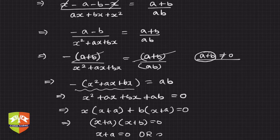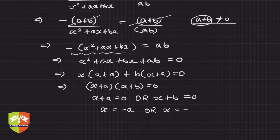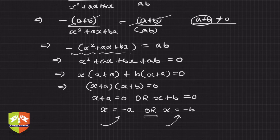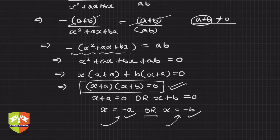Since the product is zero, either (x + a) = 0 or (x + b) = 0. So x = −a or x = −b. We say 'or' not 'and' because if any one of the two is satisfied, the equation holds true. It need not be that x equals both −a and −b simultaneously — either one being true is sufficient.